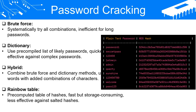Rainbow Table Attacks. Rainbow table attacks are a more sophisticated form of attack that take advantage of the nature of hash functions. A rainbow table is a pre-computed table of hashes for every possible password up to a certain length and complexity. An attacker can use a rainbow table to quickly look up the hash of a stolen password and find the original password that corresponds to it. The main advantage of rainbow tables is that they can crack passwords much faster than brute force or dictionary attacks. However, they require a significant amount of storage space and take a long time to generate. Furthermore, they are less effective against systems that use salting — adding random data to the password before hashing it — which dramatically increases the number of possible hashes.